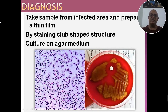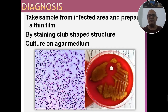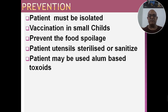Diagnosis: Take sample from infected area and prepare a thin film — शरीर के जिस भाग में infection है वहाँ से sample लेते हैं और slide पर पतली film बनाते हैं। By staining, club-shaped structures appear under microscope। Culture on agar medium में भी इसको संवर्धित करके diagnosis किया जा सकता है।